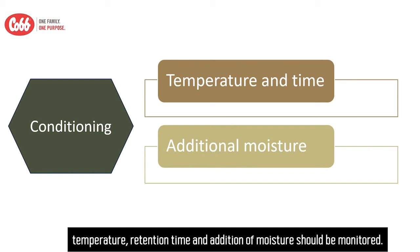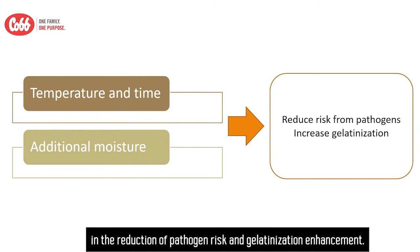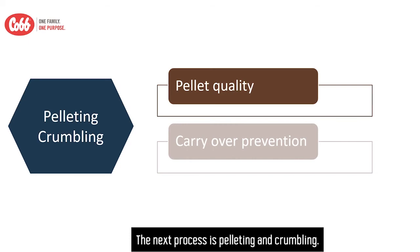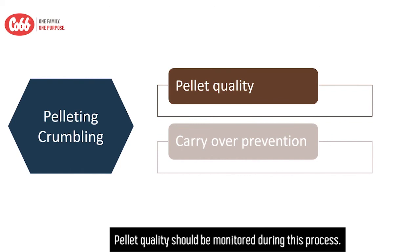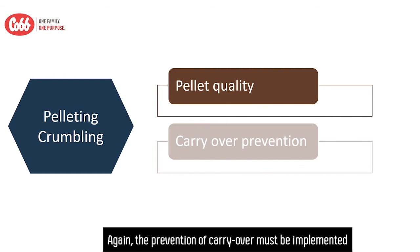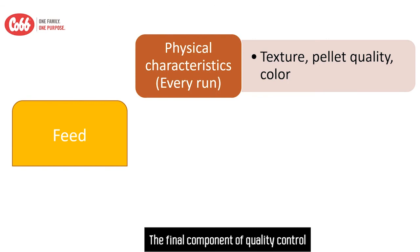In the conditioning process, temperature, retention time, and addition of moisture should be monitored. These parameters are involved in the reduction of pathogen risk and gelatinization enhancement. The next process is pelleting and crumbling. Pellet quality should be monitored during this process, and again, the prevention of carryover must be implemented in the case of medicated feed.